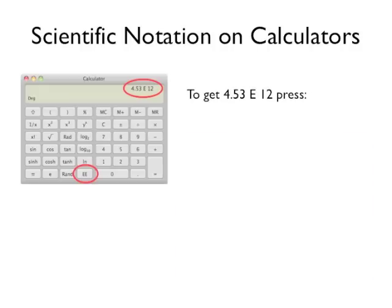To enter 4.53 times 10 to the 12th on this calculator, you would press 4.53 EE 1 2. You know you are successful when the calculator displays the number with the shorthand E.